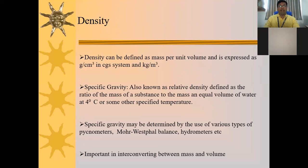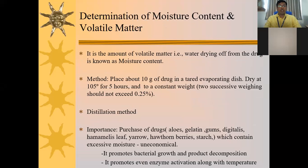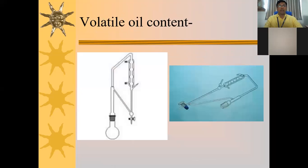Specific gravity and density are also physical constants. Determination of moisture content and volatile matter is another physical constant; the moisture content is determined using a distillation method and the volatile oil is determined using the Clevenger's apparatus.